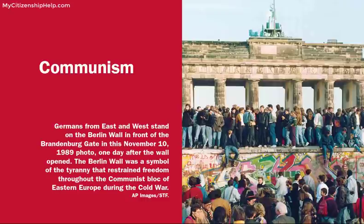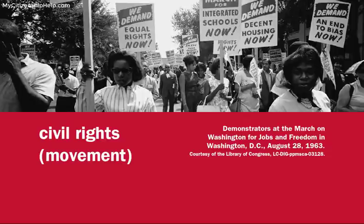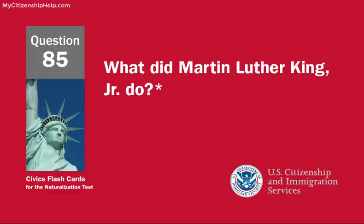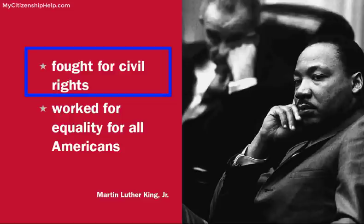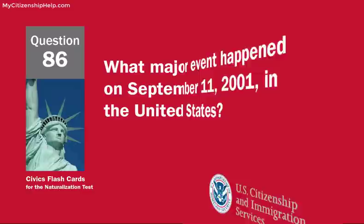What movement tried to end racial discrimination? The civil rights movement. What did Martin Luther King Jr. do? Fought for civil rights. What major event happened on September 11, 2001 in the United States? Terrorists attacked the United States.